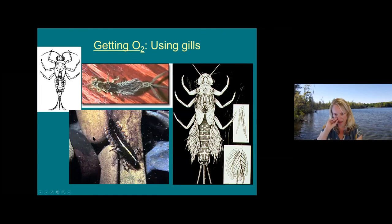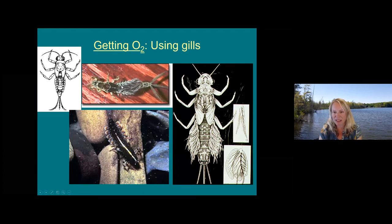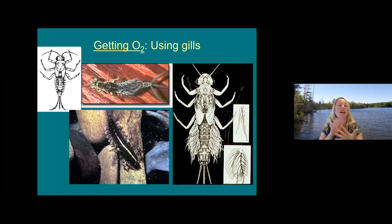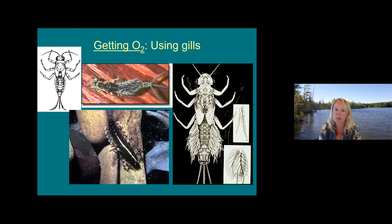You'll tend to see bugs that are a little more efficient at getting oxygen. Mayflies are one example — they have very obvious gills along the sides of the abdomen, and the shape and appearance of those gills can help indicate which species you're looking at. If you have a live mayfly nymph in a pan, you can often watch those gills constantly moving, circulating water across the gill surface, allowing them to get oxygen more efficiently than a stonefly can. So they're a little less sensitive to declines in oxygen than stoneflies, but still fairly sensitive.